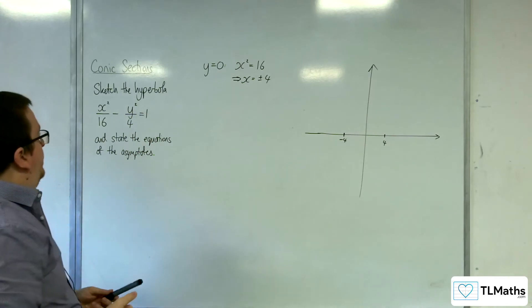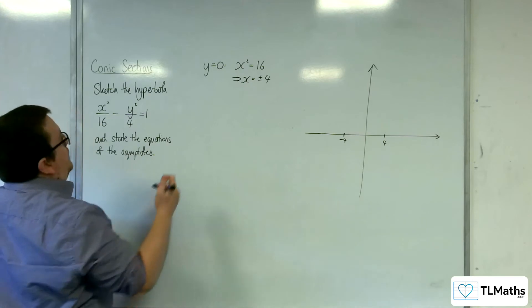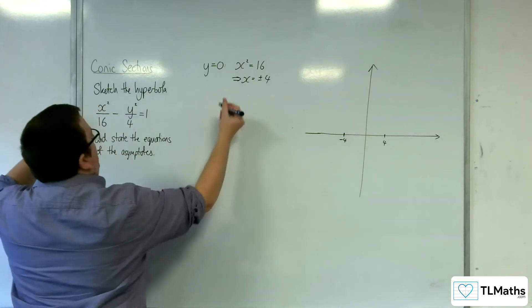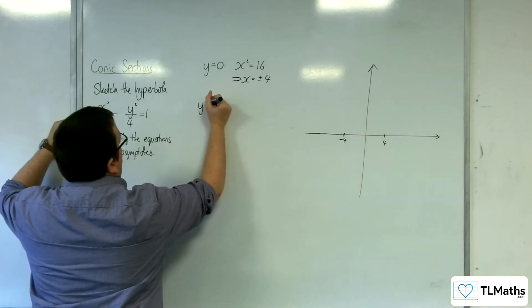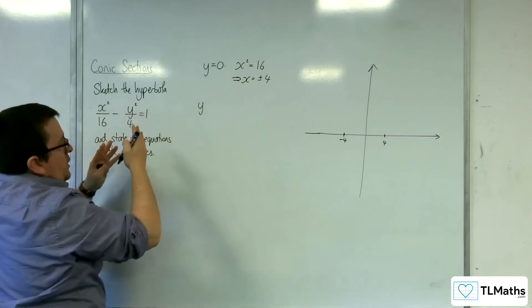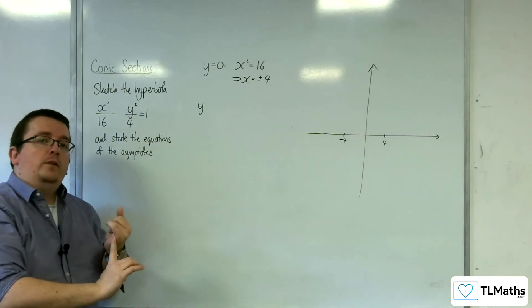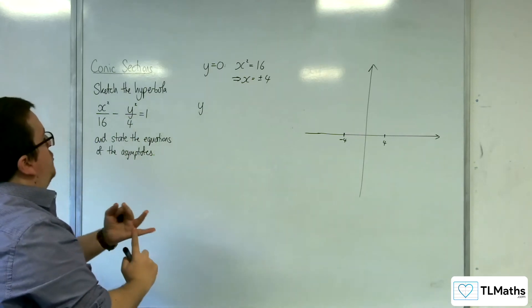Now for the asymptotes. For the asymptotes, you can rearrange this and set it up that way. For AQA, you do have the equations of the asymptotes in the formula booklet as well, just so you're aware.